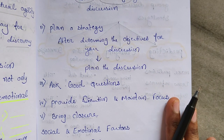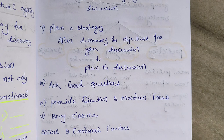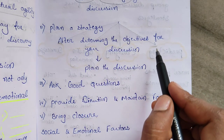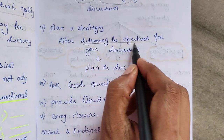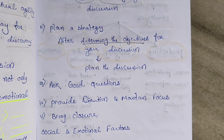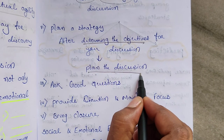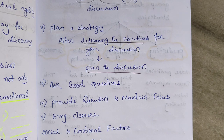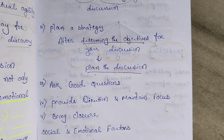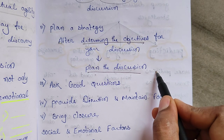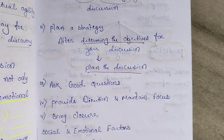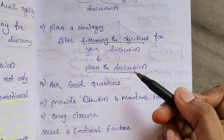The second point under cognitive factors is planning strategy. After determining the objective of your discussion, you will plan the discussion: how do you want students to prepare, what questions you will pose to the students, how you will discuss, how you will deal with the students, what type of questions you will ask, what information you will give, and how you will prepare students for the discussion.